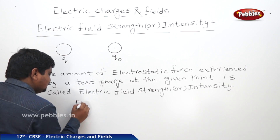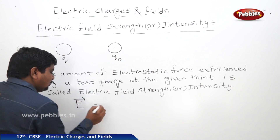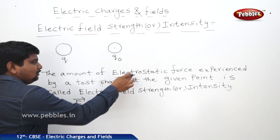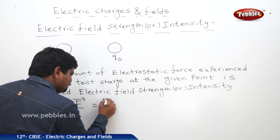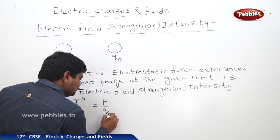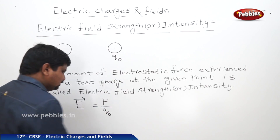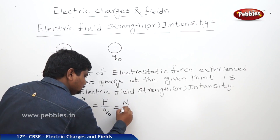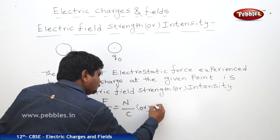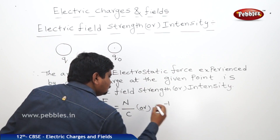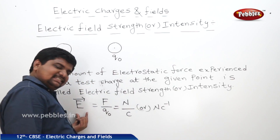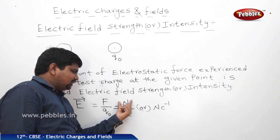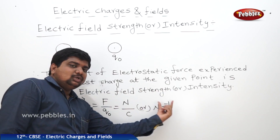The equation will be like this — E is a vector quantity. E is equal to the force experienced by a test charge divided by q₀, that is E = F / q₀. The units of E: force is in newtons and charge is in coulombs, so the units of electric field strength or intensity will be Newton per coulomb, or Newton coulomb inverse.